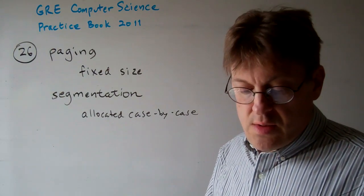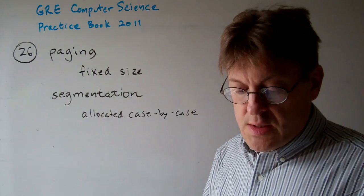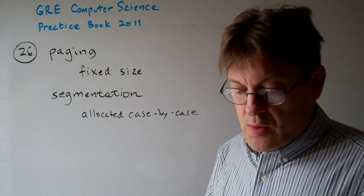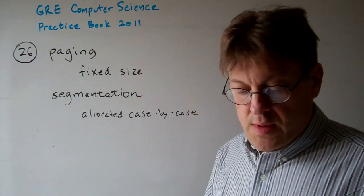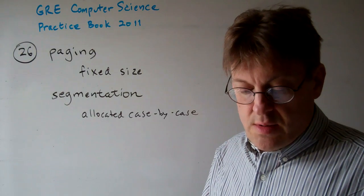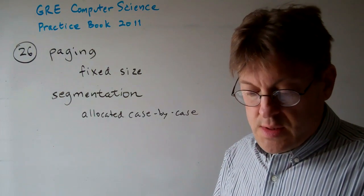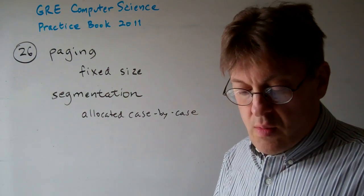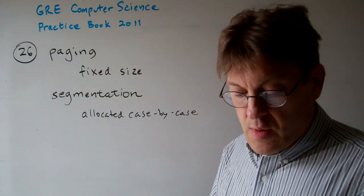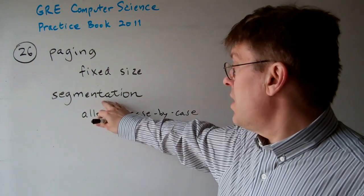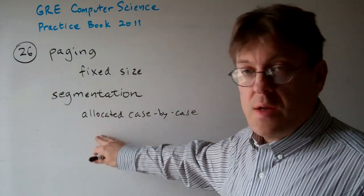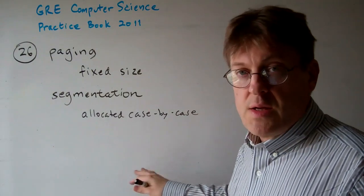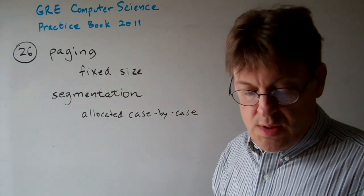D says paging requires one page table per process, where segmentation requires only one global segment table for the entire system. No, that's not correct. Paging can require more than one page table. As a matter of fact, a lot of times you'll have it segmented, and then within each segment there might be paging within the segment.